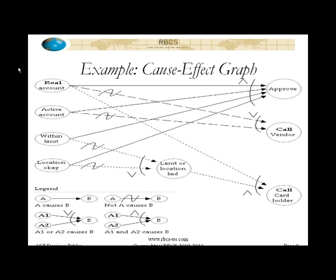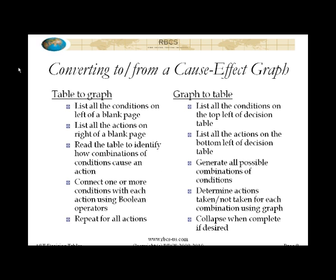Now, given a table, if you do like these, if you do think these things are really cool and you just can't live without them in your life, you want to be able to create them from the table. Well, it's easy enough. You take the conditions, you put them on the left-hand side of a blank piece of paper or blank Visio sheet, if you're using Visio, and then you list all the actions on the right-hand side. So the conditions are on the top left of the decision table and the actions are on the bottom left, and so you're basically just grabbing them and putting them on opposite sides of a piece of paper.